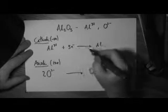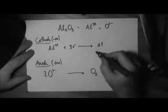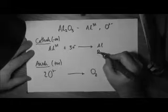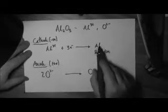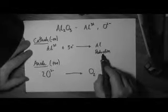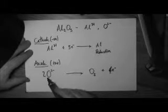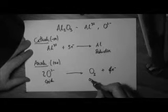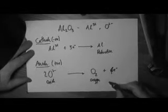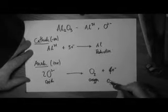So at the cathode we get aluminium as the product and this is gaining electrons so this is a reduction. Aluminium ions are reduced to aluminium metal and we get that at the cathode. Oxide ions become oxygen by losing electrons so this is an oxidation.